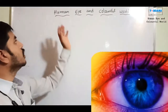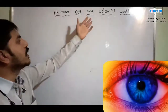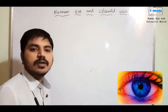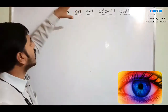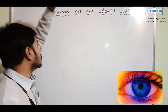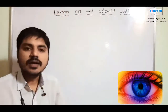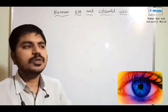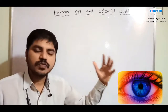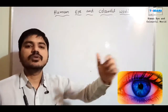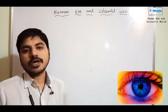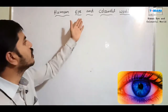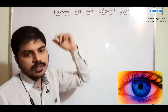We are going to discuss the human and colorful world. The human eye is a very important organ in our body. With the human eye we can see each and every object in the world, including the colorful world around us.